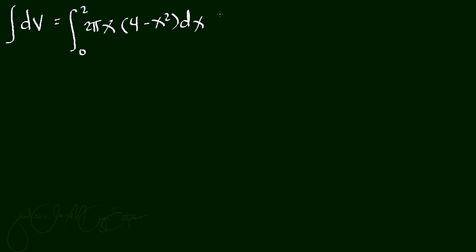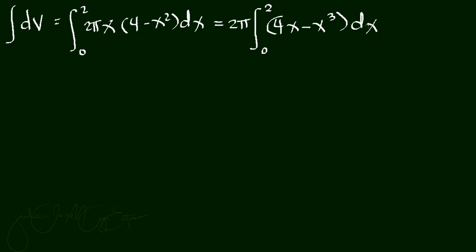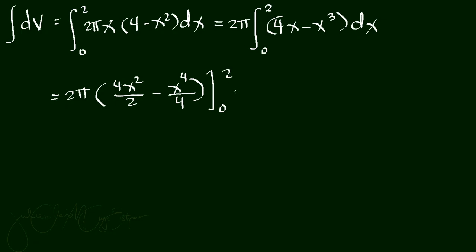Getting the integral: bring out 2π as a constant. From 0 to 2, first simplify: x(4 − x²) = 4x − x³. So V = 2π ∫₀² (4x − x³) dx = 2π [4x²/2 − x⁴/4] from 0 to 2, which simplifies to 2π [2x² − x⁴/4] from 0 to 2.